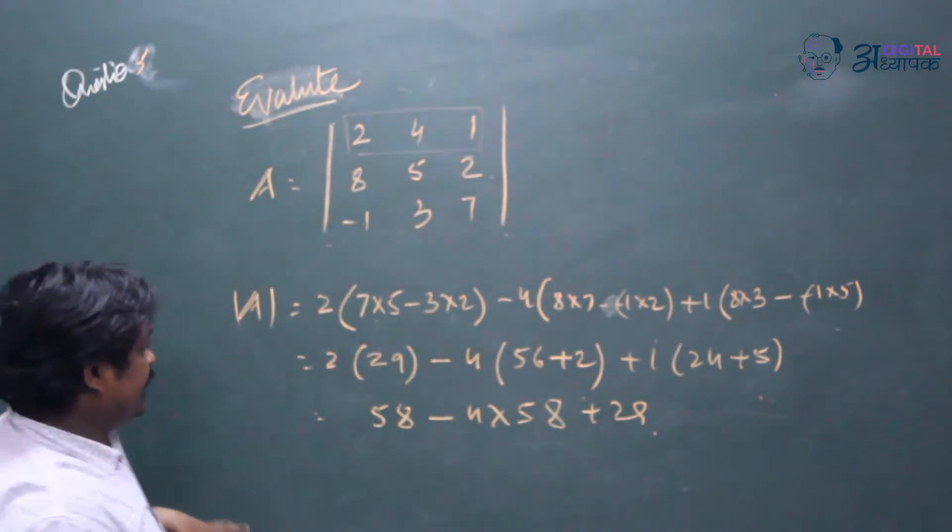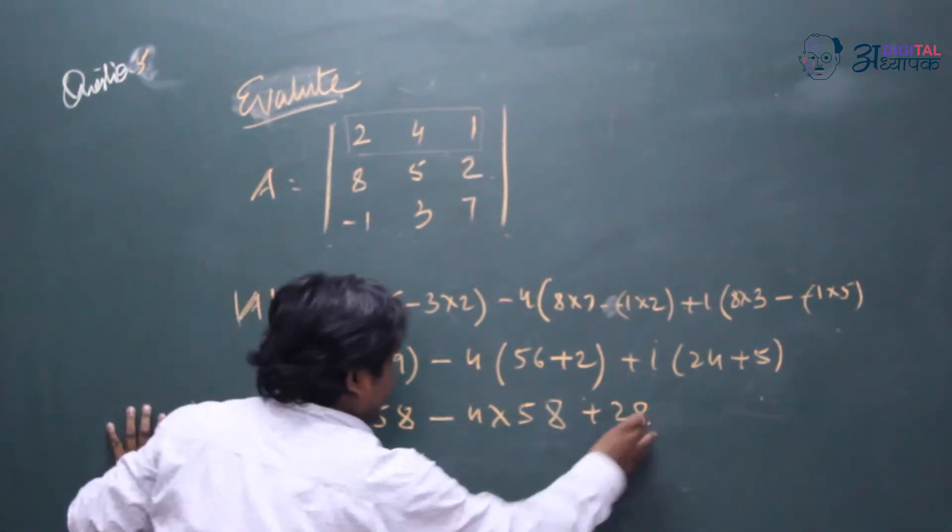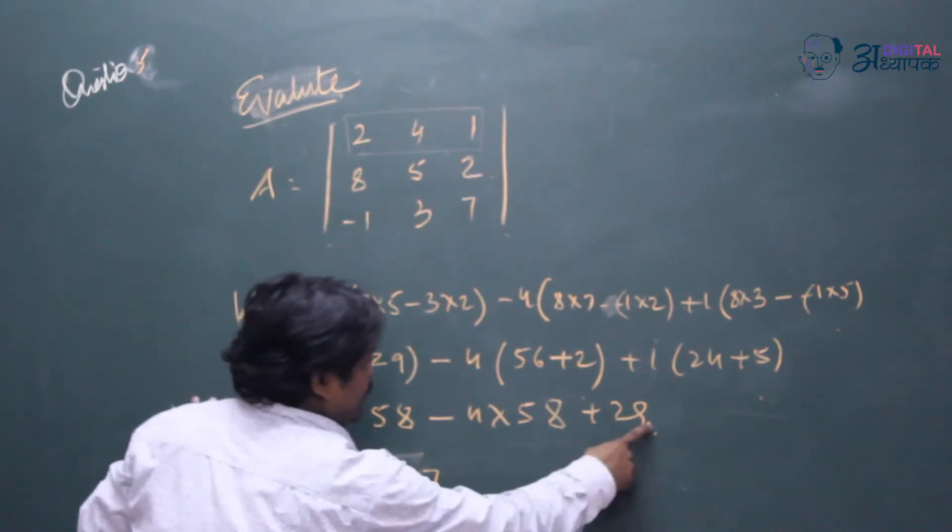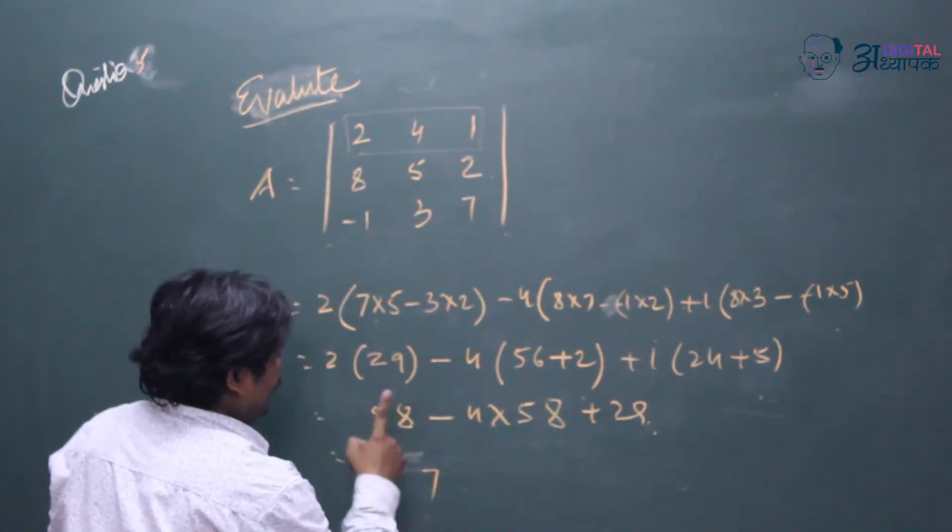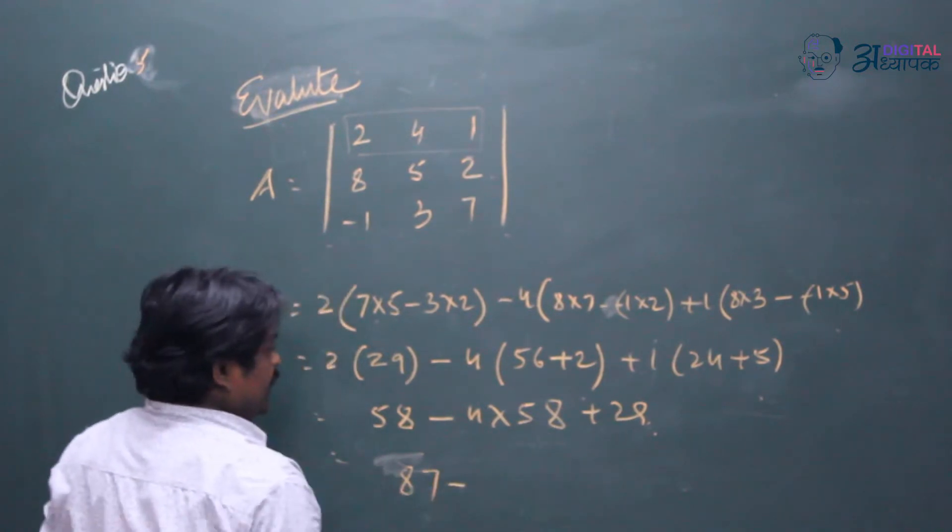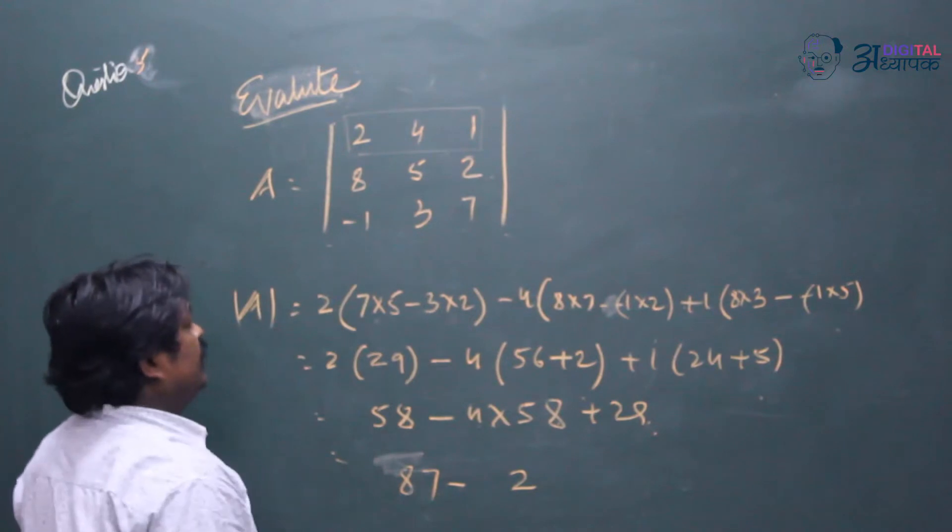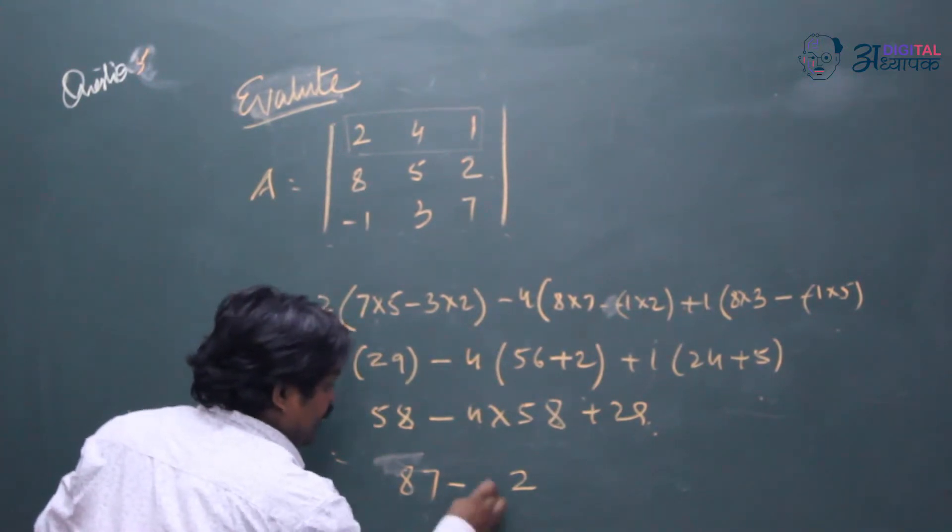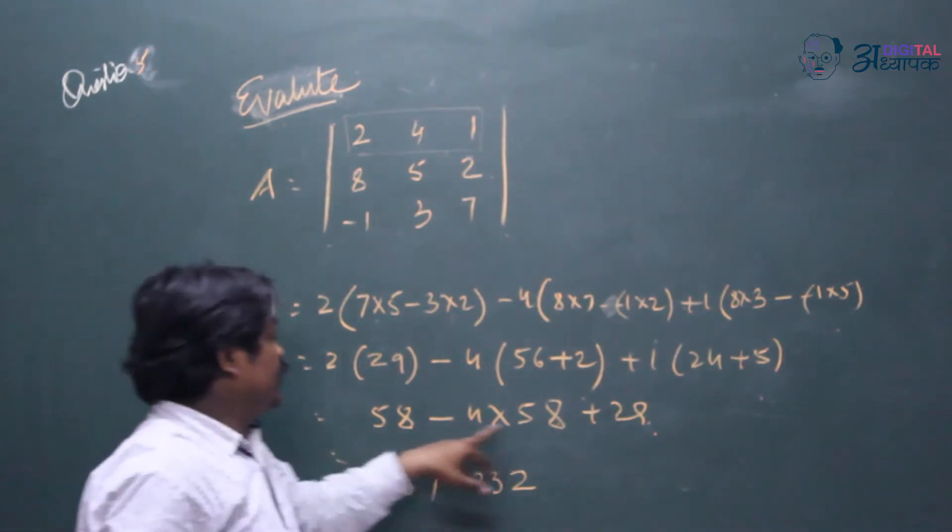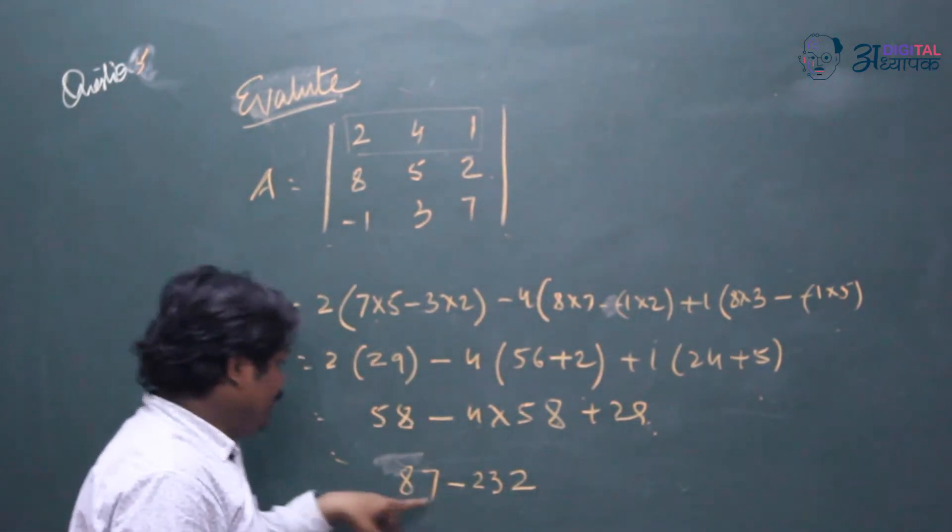So we get 58 plus 29, that means 9 plus 8, 17 and 5, 1, 6, up to 87. Minus and this will be 4 into 58, carry 3, 5 for the 20 and 3, 23. That's 232. So 232 minus 87.